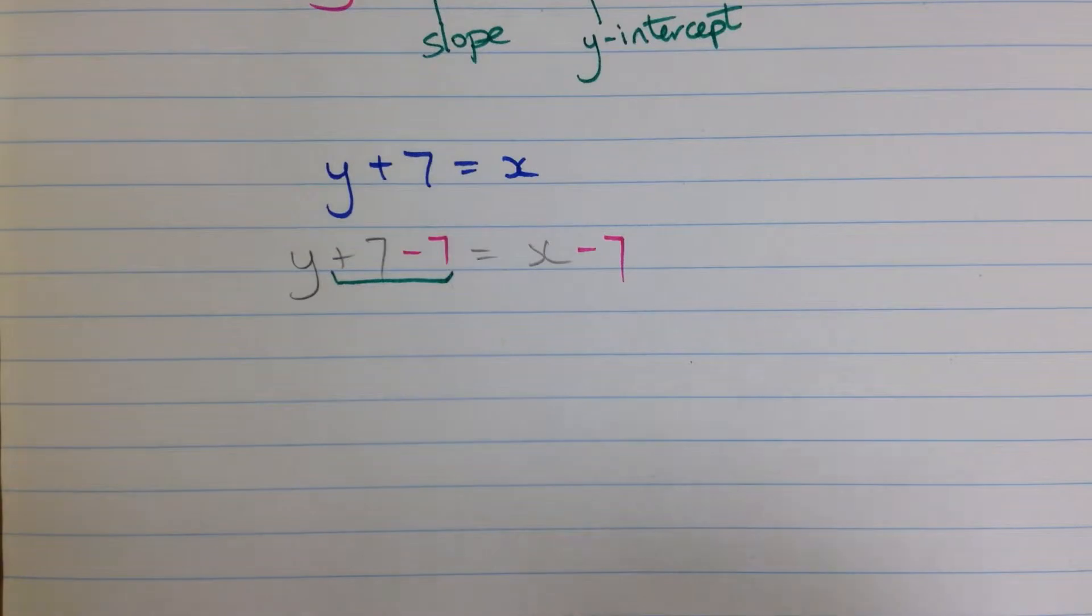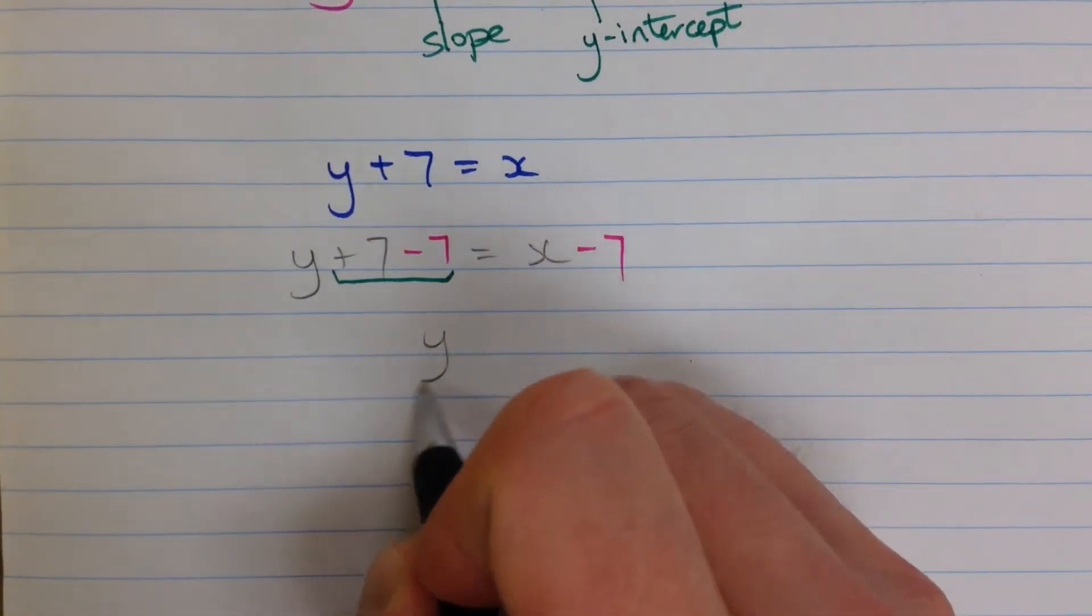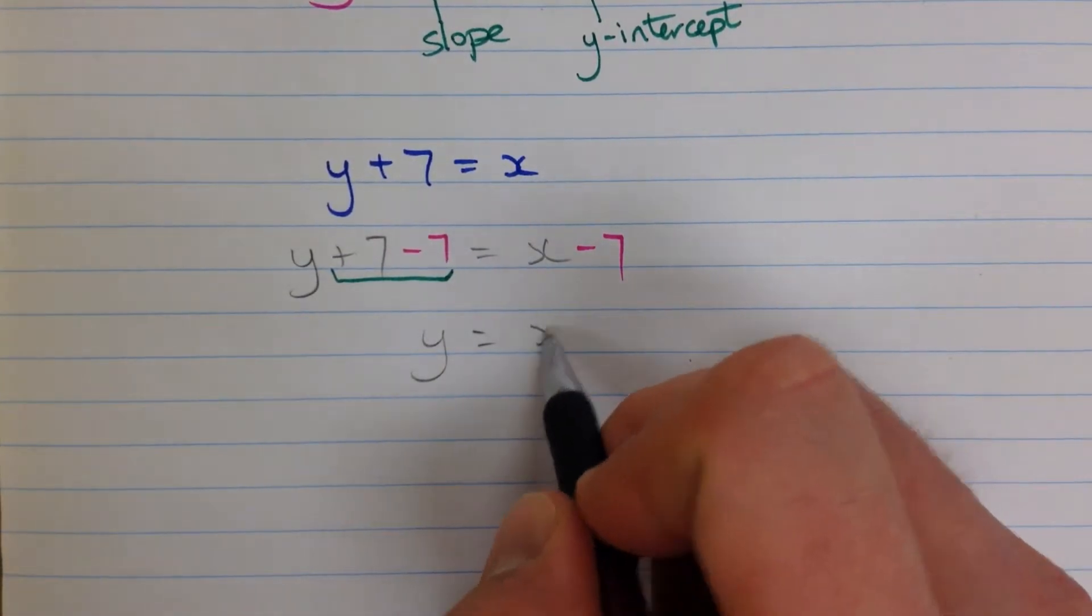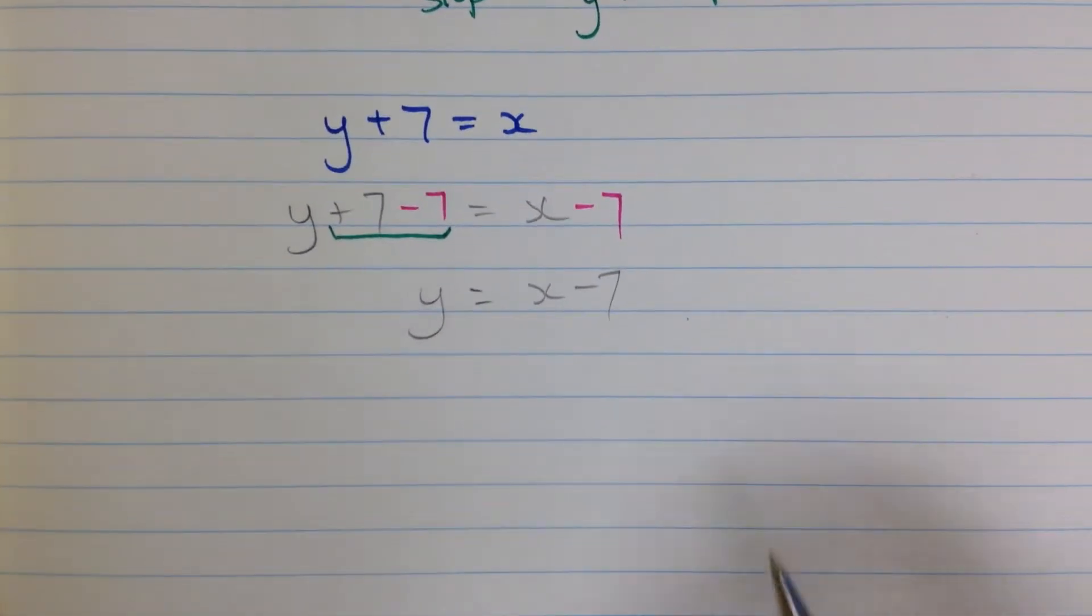When you do that subtraction, you get 0. So we're left with just y on this side.